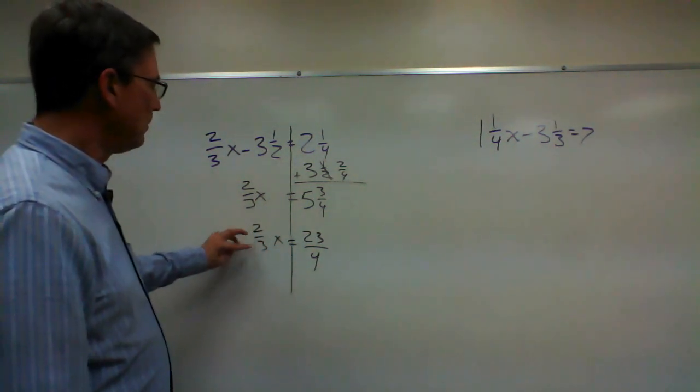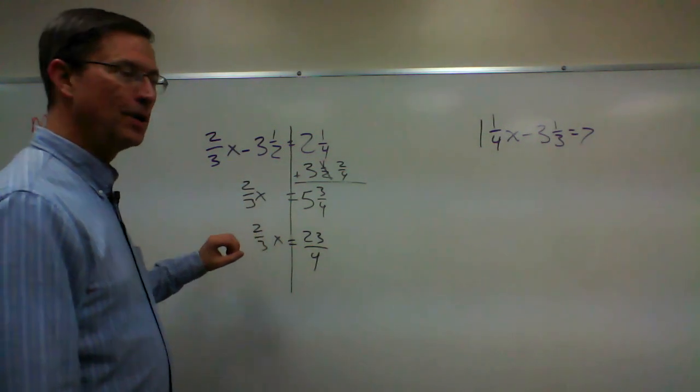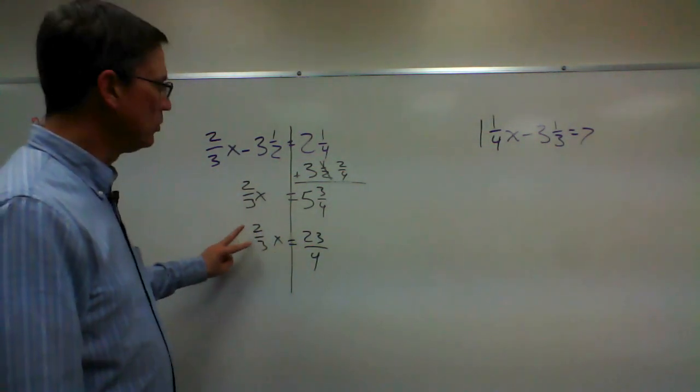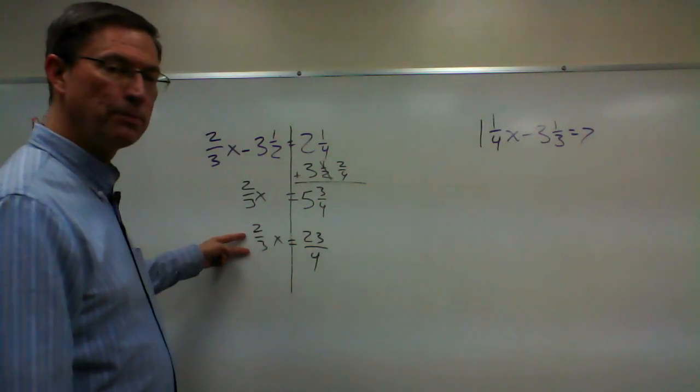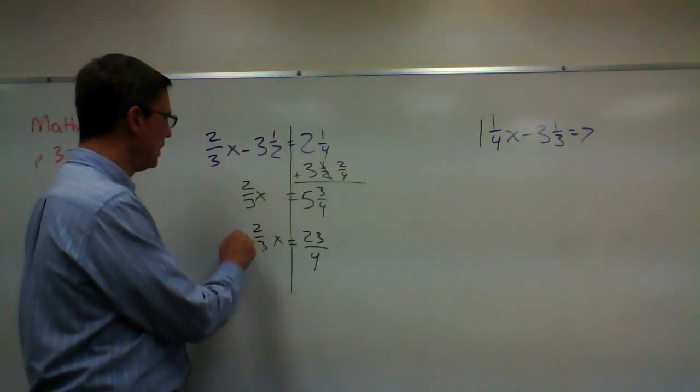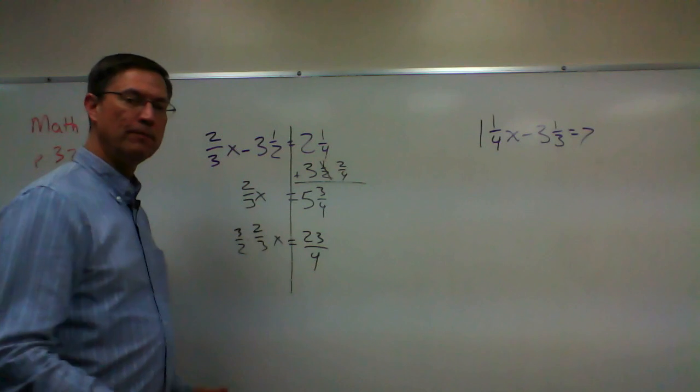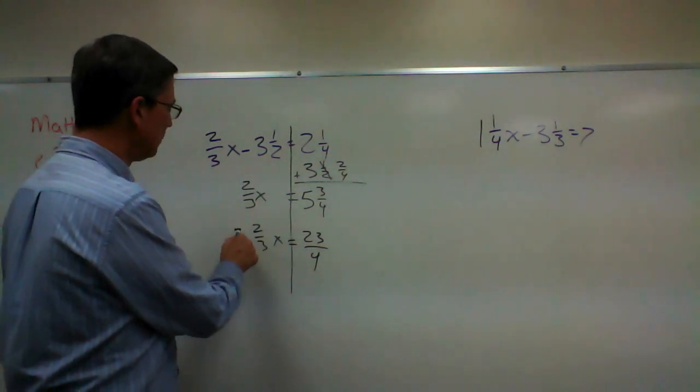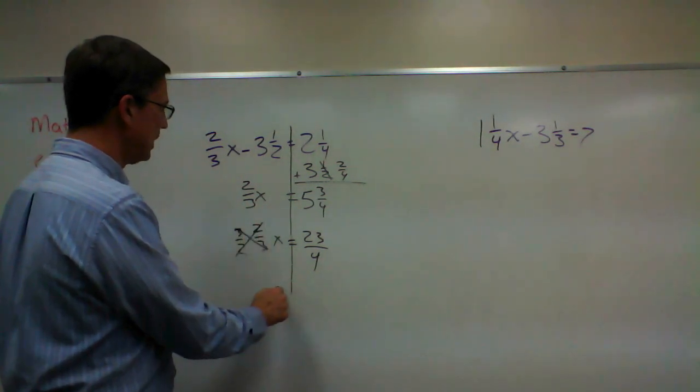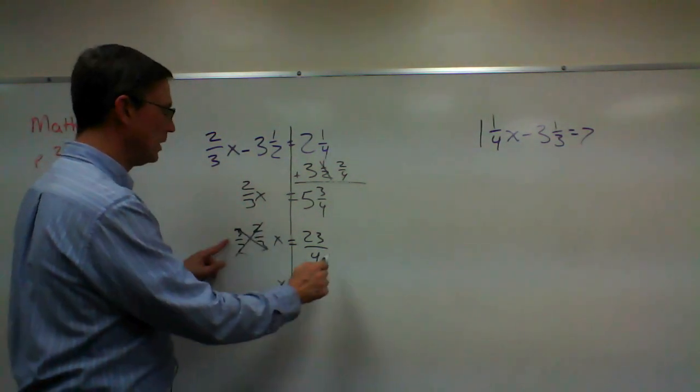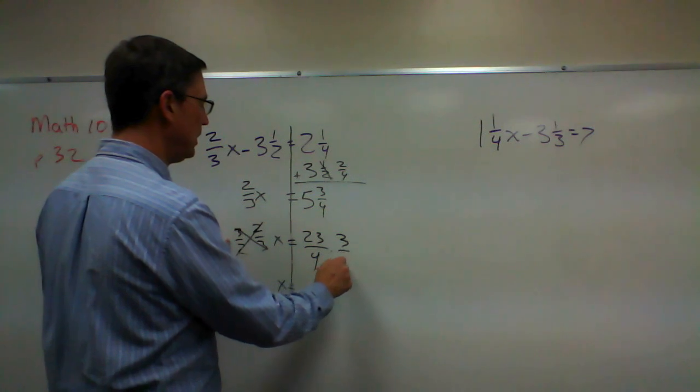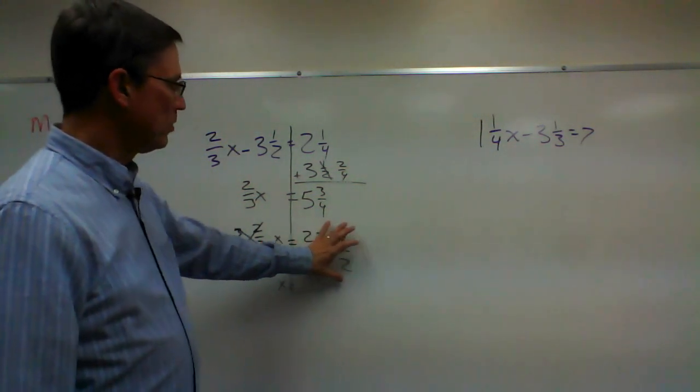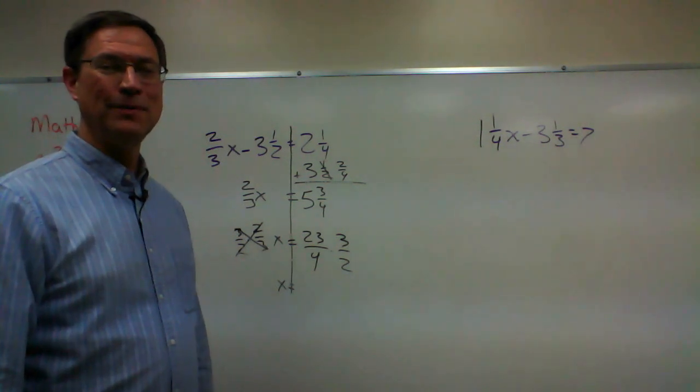Then remember the tip I gave you in the last video: whatever fraction is in front of the variable, you multiply by the reciprocal, because two thirds times three over two would be six over six, which is one. Or you can see that the threes will cancel and the twos will cancel. So x equals, I got to do the same thing over here, three over two. Now you can finish the problem.